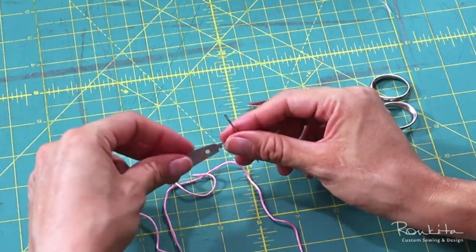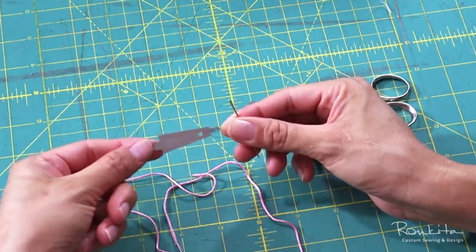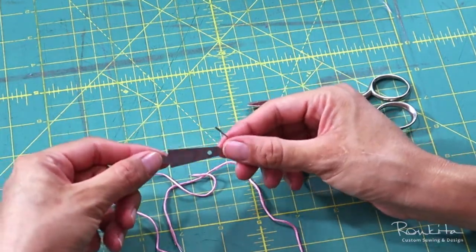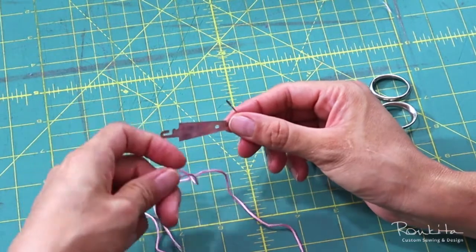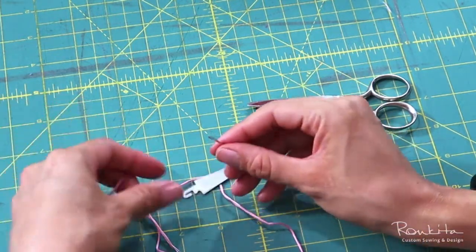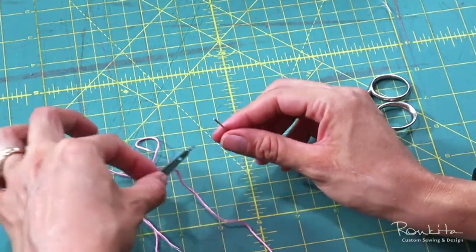So needle threaders are a little bit different. This particular one has two hooks, larger and smaller. We'll be using the smaller end today. The other more popular type of needle threader has a wire loop. It's very similar in how you use it.